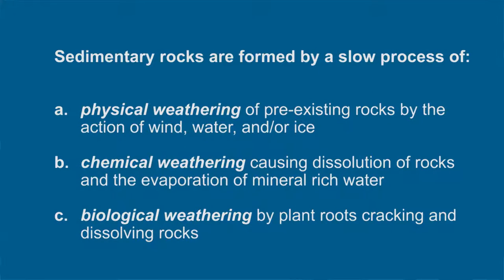The second type of rocks in our story are sedimentary rocks, which are formed at or near the surface by a slow process of: (a) physical weathering of pre-existing rocks by the action of wind, water, and ice; (b) chemical weathering causing dissolution of rocks or evaporation of mineral-rich water; or (c) biological weathering by plant roots cracking and dissolving rocks.